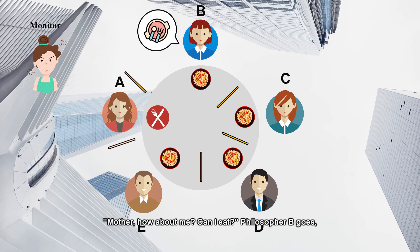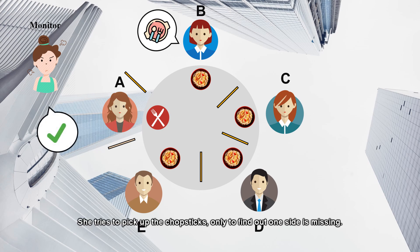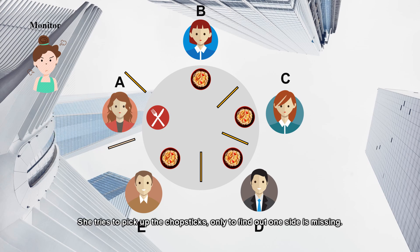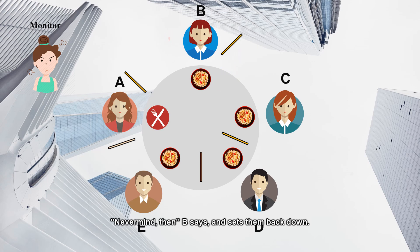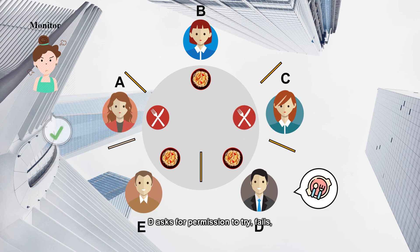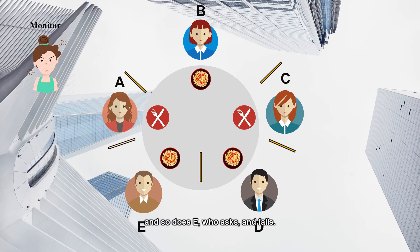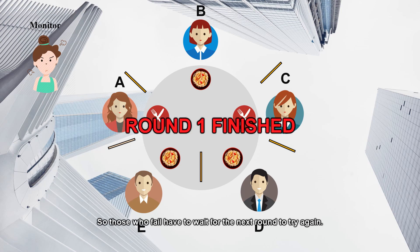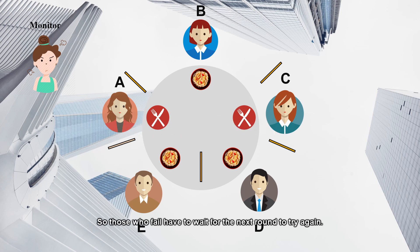'Mother, how about me? Can I eat?' Philosopher B goes, so mother says, 'Go ahead and try.' She tries to pick up the chopsticks, only to find out one side is missing. 'Nevermind then,' B says and sets them back down. The same situation goes for C, who succeeds in getting two. D asks for permission to try, fails, and so does E, who asks and fails. So those who fail have to wait for the next round to try again.